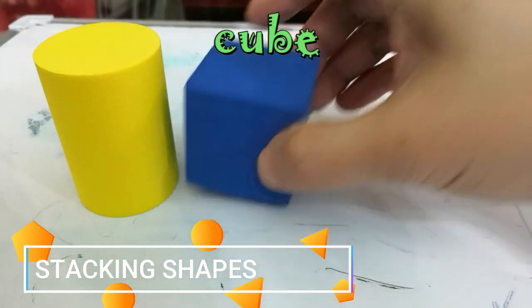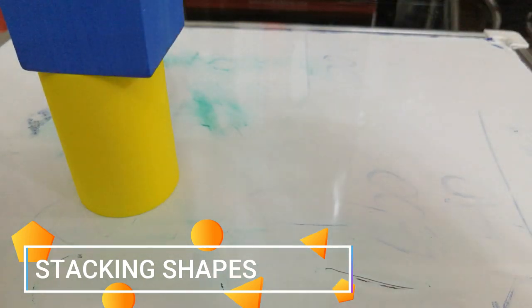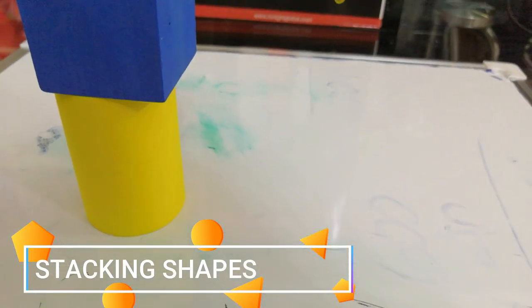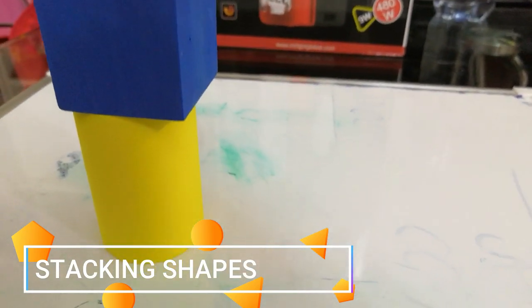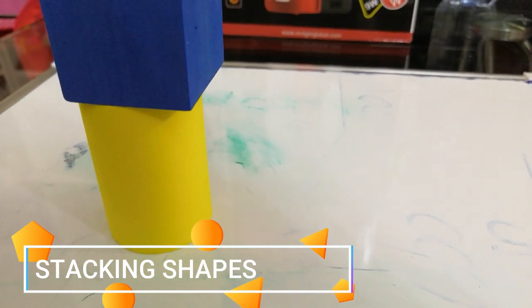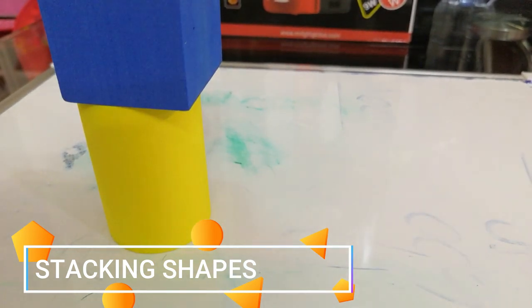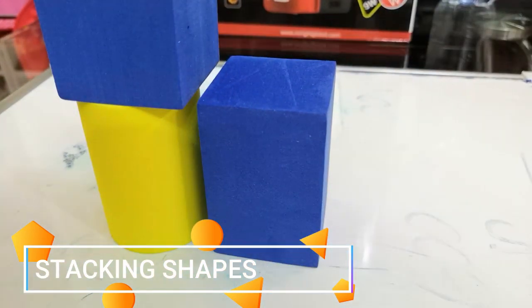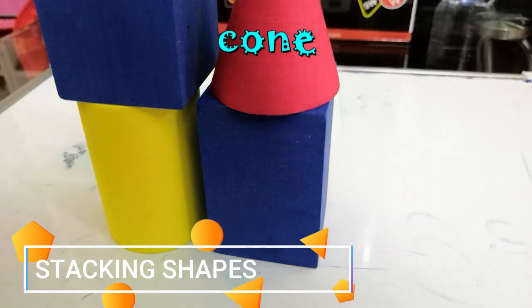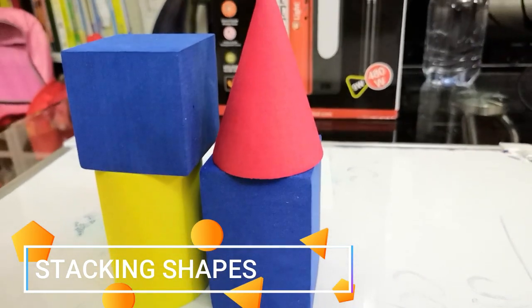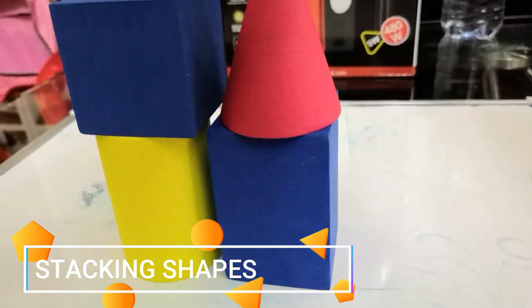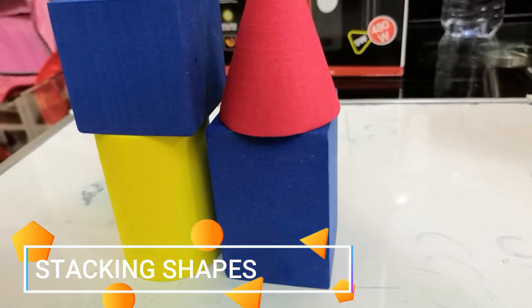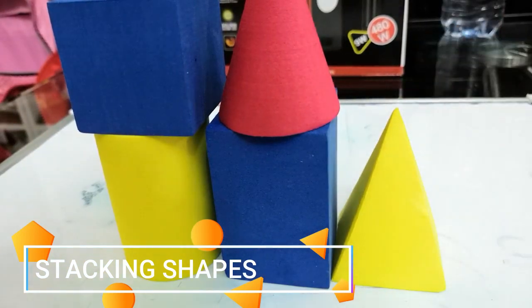So it can also stack on top of other figures that have a flat shape. Next, we have a cuboid or a rectangular prism, a cone, and a pyramid.